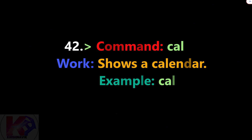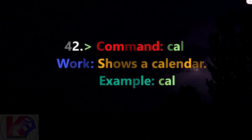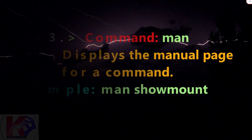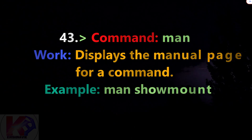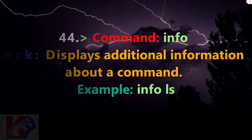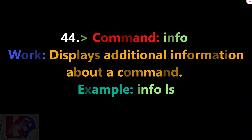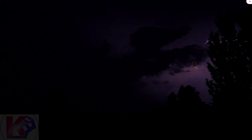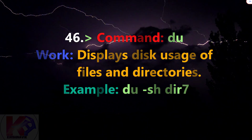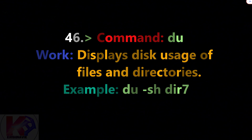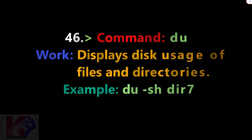Command cal: shows a calendar. Example: cal. Command man: displays the manual page for a command. Example: man command. Command info: displays additional information about a command. Example: info command. Command df: shows disk space usage. Example: df -h. Command du: displays disk usage of files and directories. Example: du -sh directory.